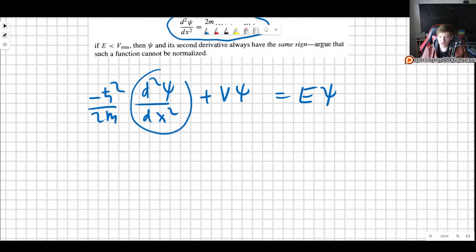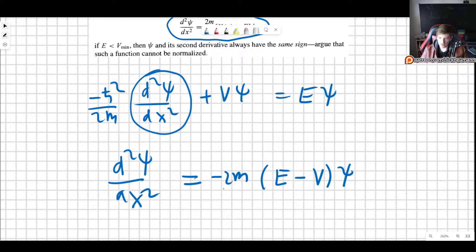Now let's isolate the second derivative and write it in terms of something times the wave function. So we just isolate this on the left-hand side and then put everything to the right. We get E minus V times psi and then minus 2m over h-bar squared. But let's get rid of the minus sign, so we multiply through and get V minus E.